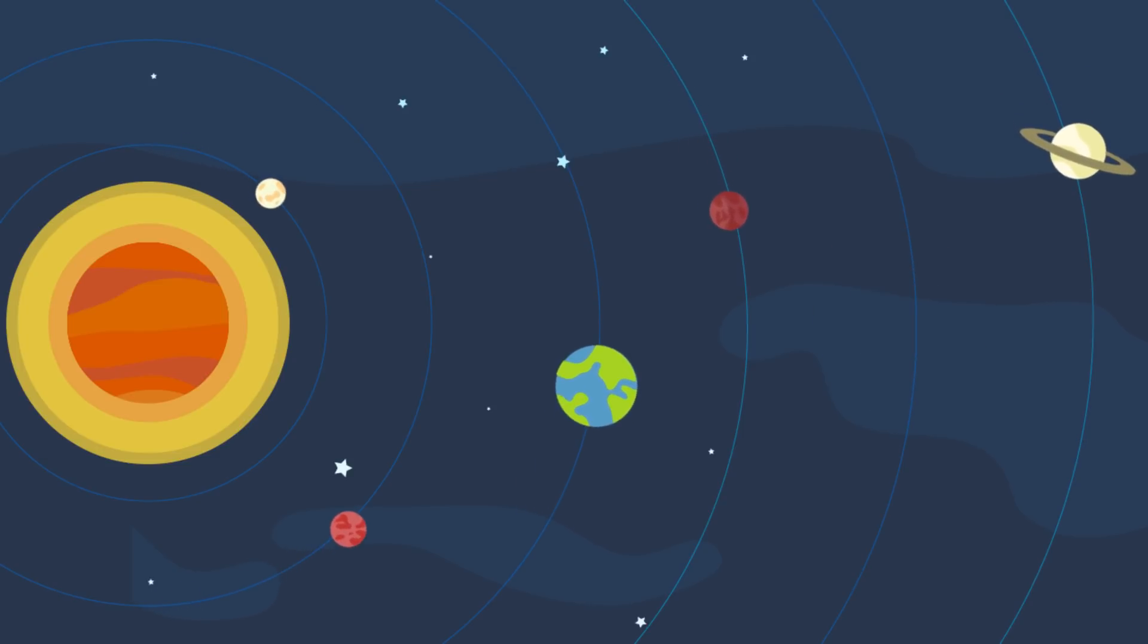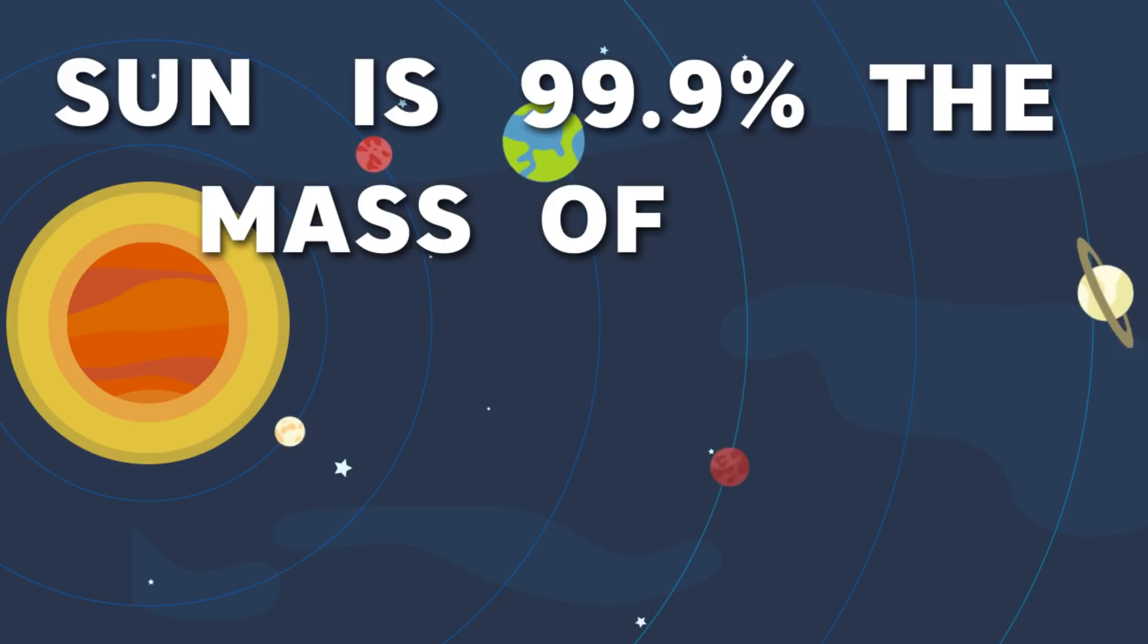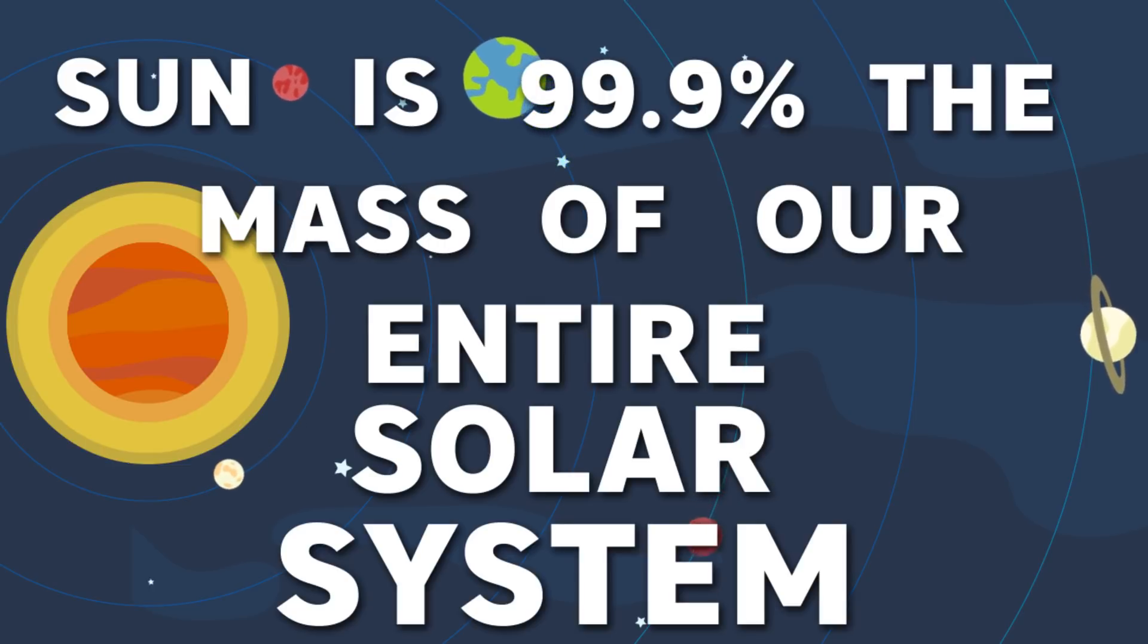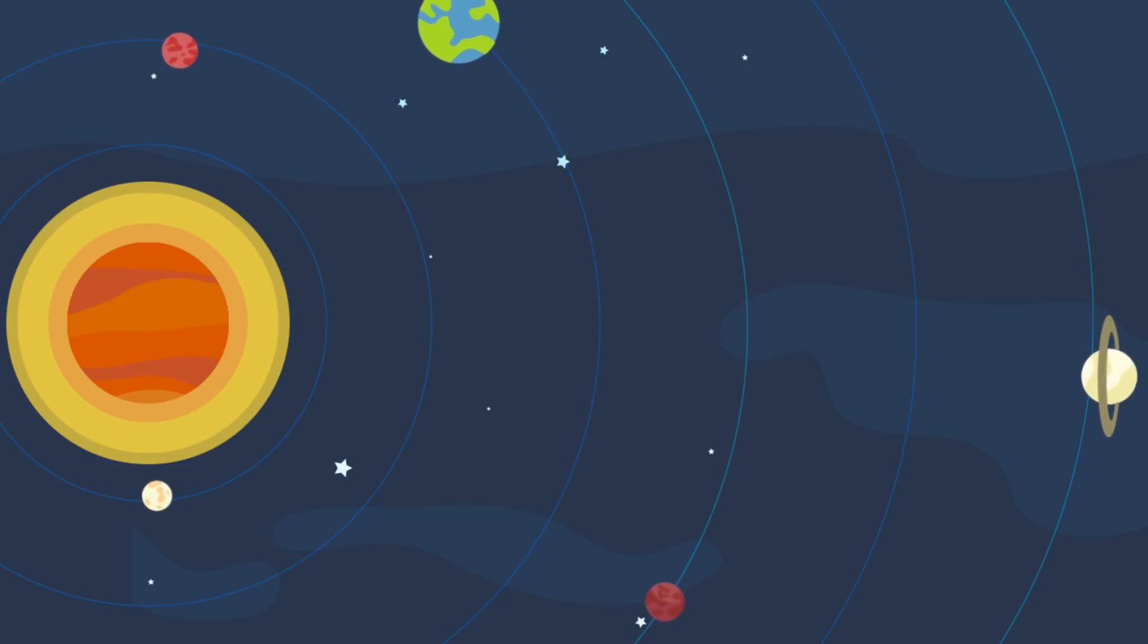The reason is, Earth and other planets orbit whatever celestial object has bigger mass, relative to their distance. The fact that our Sun is 99.9% the mass of our entire solar system, we are completely bound to Sun.